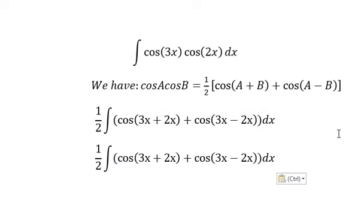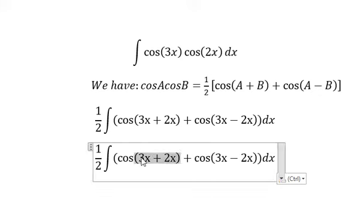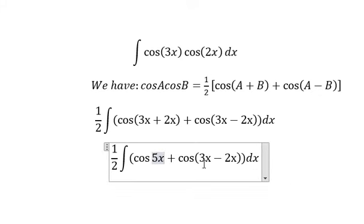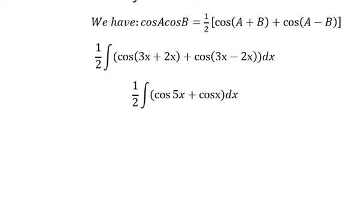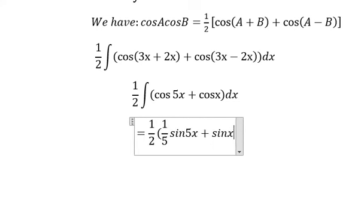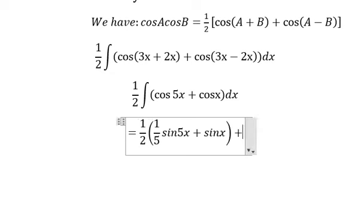And now we can get the final answer. That is 1 over 2 times 1 over 5 sin 5x plus sin x plus C.